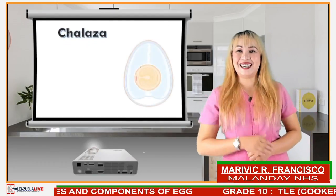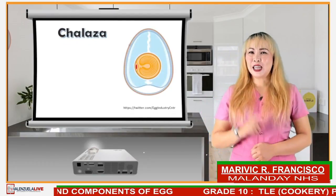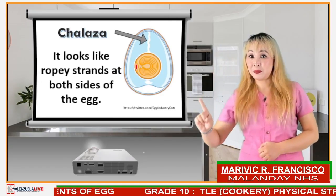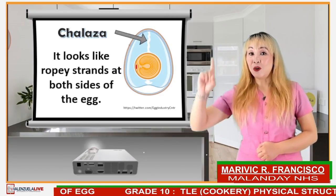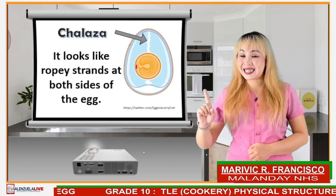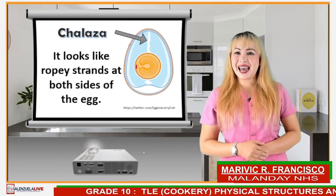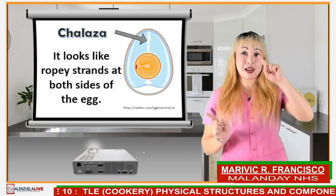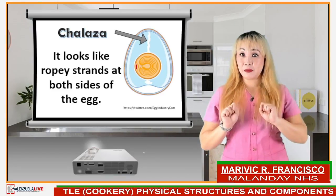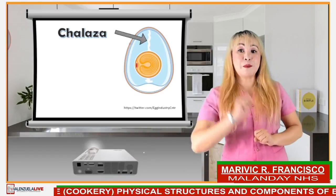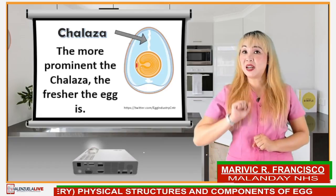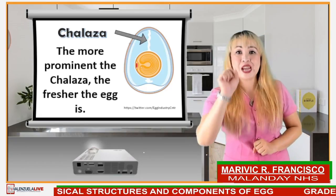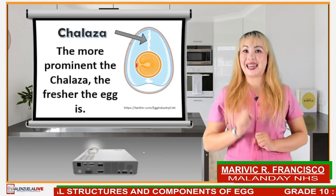The chalaza — it looks like a ropey strand on both sides of the egg. The more prominent the chalaza, the fresher the egg is.